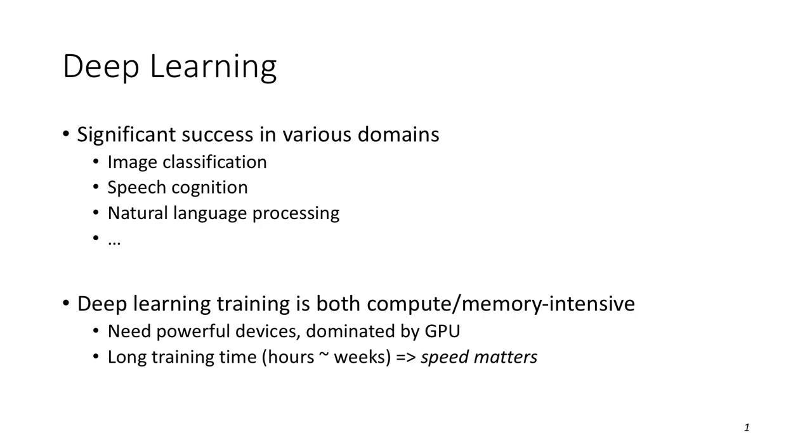It's well known that deep learning has gained success in various domains such as image classification, speech recognition, natural language processing. But first, the deep learning models need to be trained. This process is both compute and memory intensive, thus needs powerful devices such as TPU, GPU, where the GPU dominates. The training can last for hours to weeks, even months, so the training speed is important.